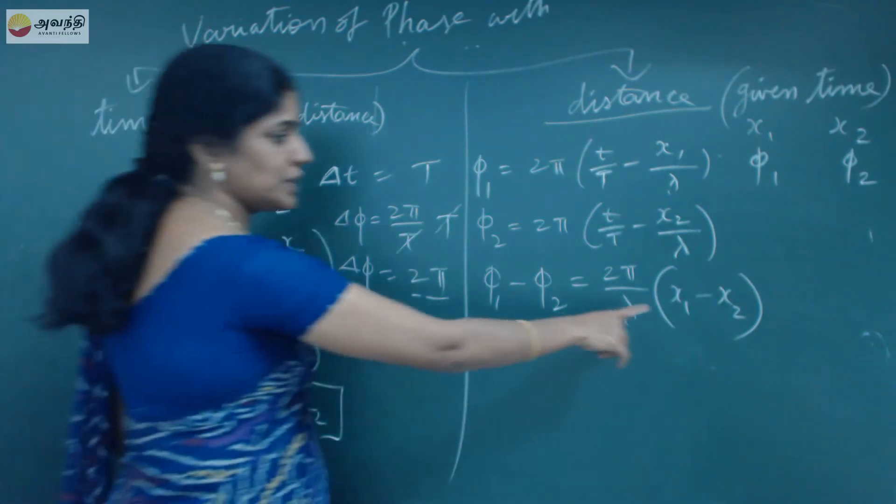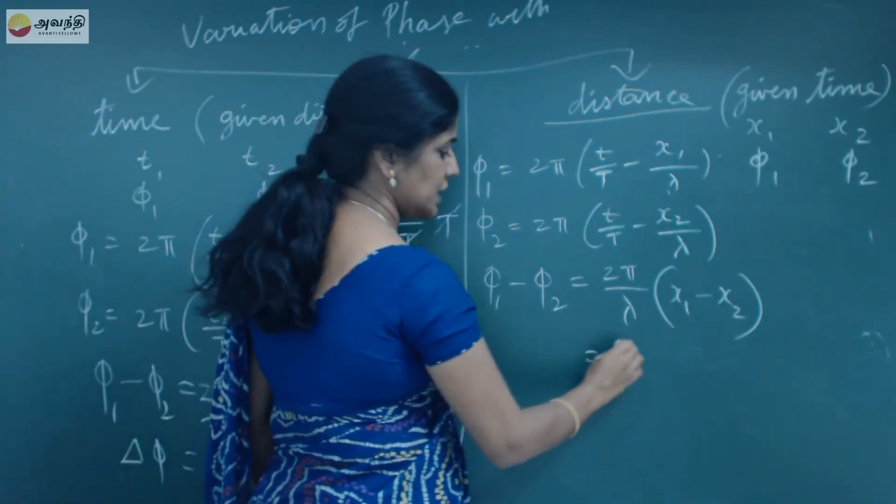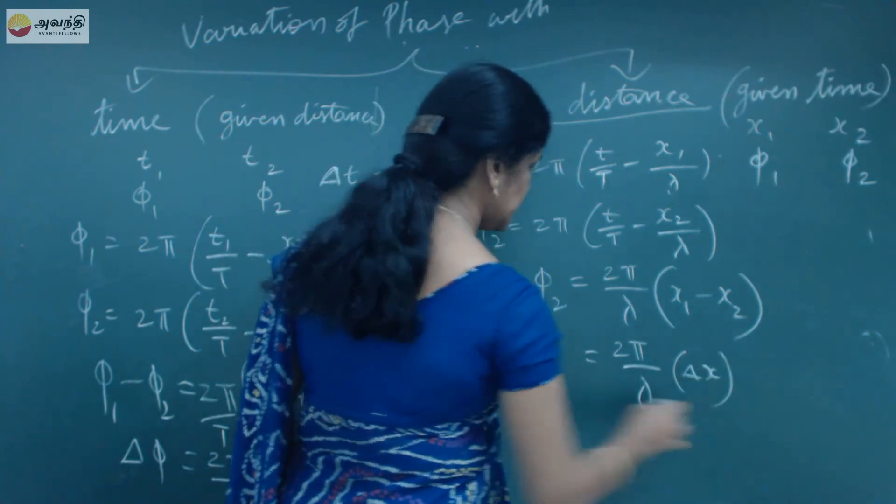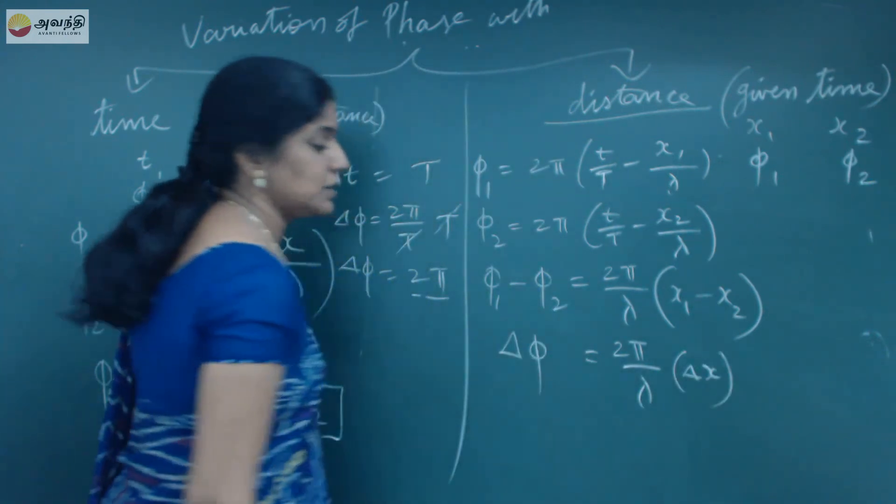Isn't it? So, this is nothing but change in distance. So, I can write this as 2π/λ into Δx. This is Δφ, change in phase.